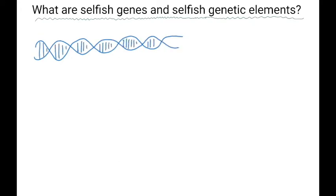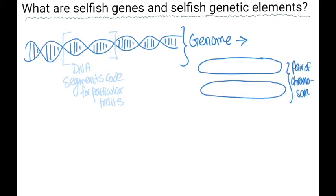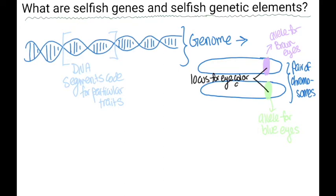To begin, let's review exactly what genes are. Genes are made of DNA segments that in the simplest cases code for a particular trait of an organism. Our genomes have well-defined places called loci that may be occupied by one of two or more genes, or alleles, with a collection of genes working as a team to generate a complex organism.